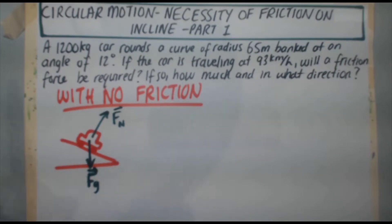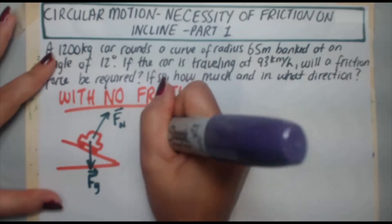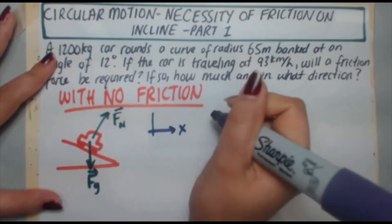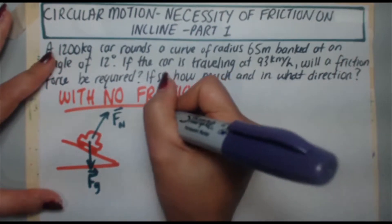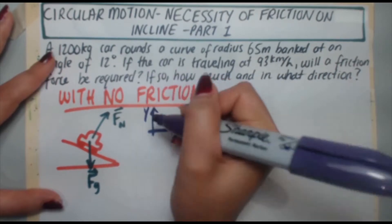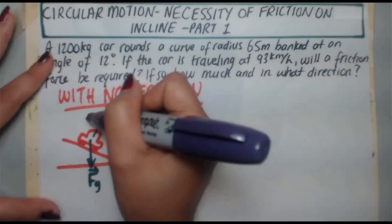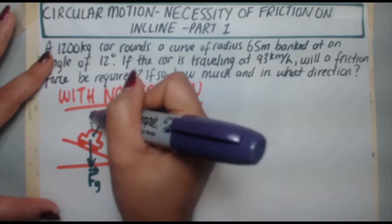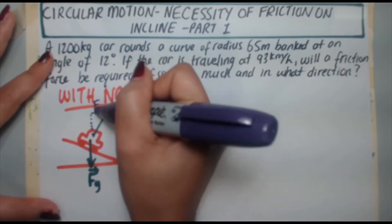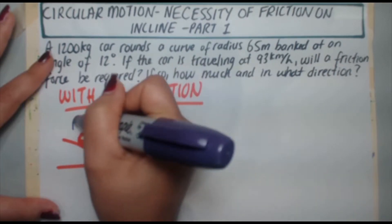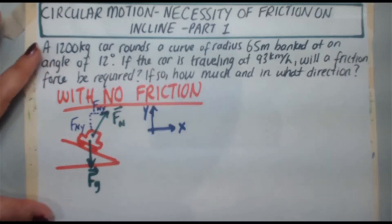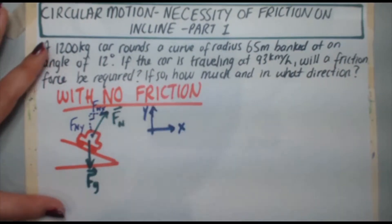Now, the normal force, I'm going to take that and break it up into components, which means I need to establish a coordinate system. I'm going to let X be to the right and positive. Up is going to be Y positive. So I can break up FN into its Y components and its X components. So there's my FNX, and here's my FNY. Those two meet at a right angle.